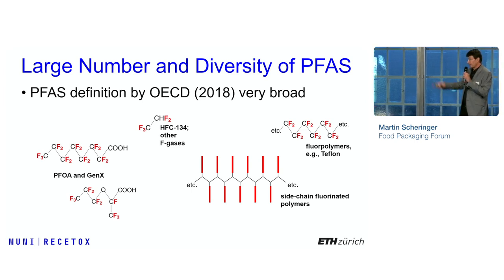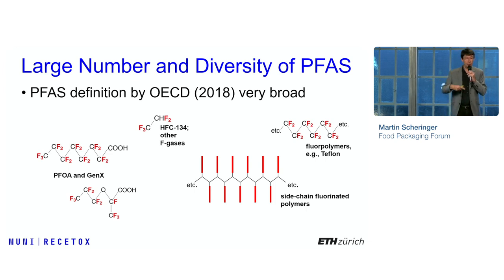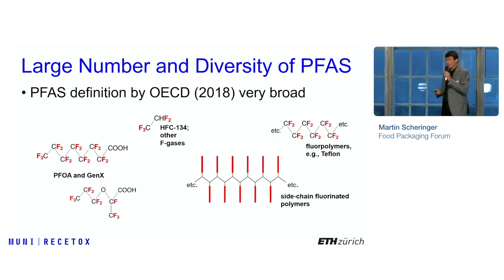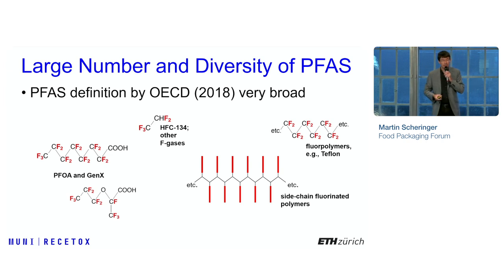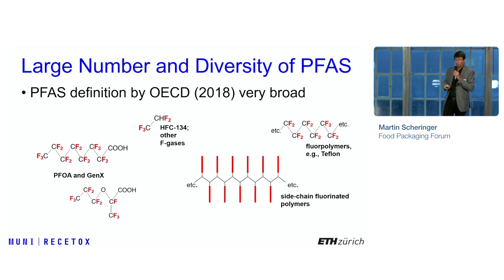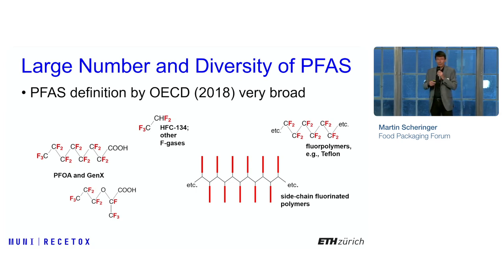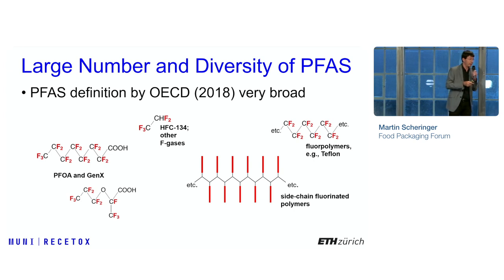At the bottom right, there is another type of polymer where the main polymer chain is not fluorinated, but there are fluorinated side chains. These side-chain fluorinated polymers have been used a lot as impregnation agents. Then in the middle at the top are F-gases — chemicals used as refrigerants in heat pumps or cooling installations. They are volatile, not water-soluble, they go up into the air. But all of them share one thing because of that fluorine: their great chemical stability. They are what we call persistent — very persistent — and many of them do not go away at all. They will stay for decades and centuries, and that is the core of the problem.